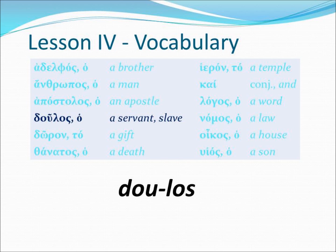Our fourth vocabulary word is doulos. The article shows us that it's a masculine noun, so ho doulos would be 'the servant,' or doulos would be 'a servant' or 'a slave.'